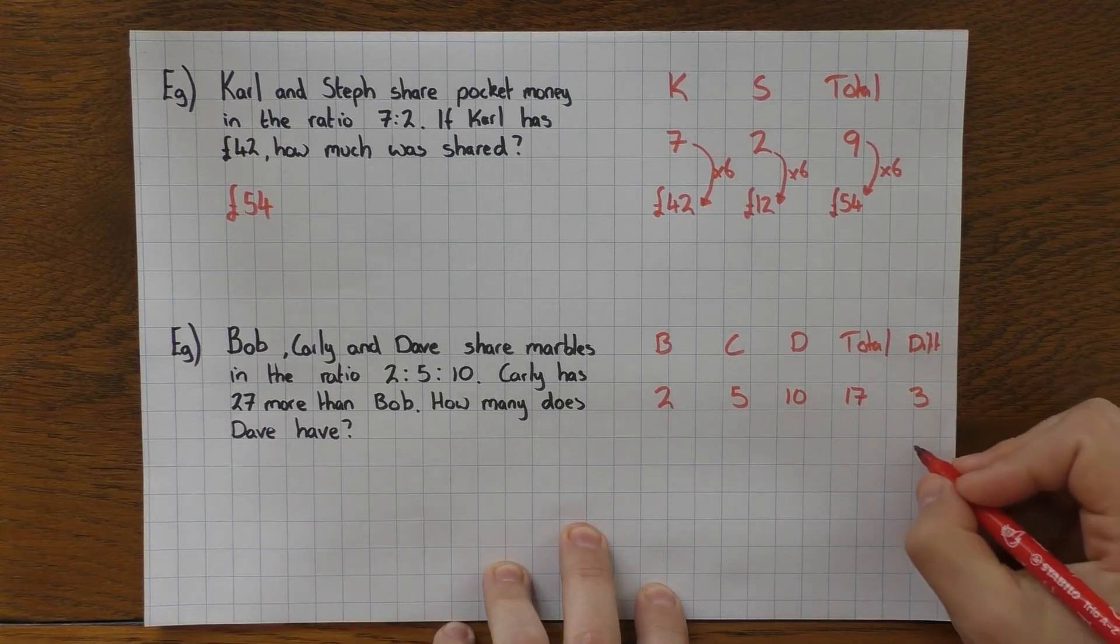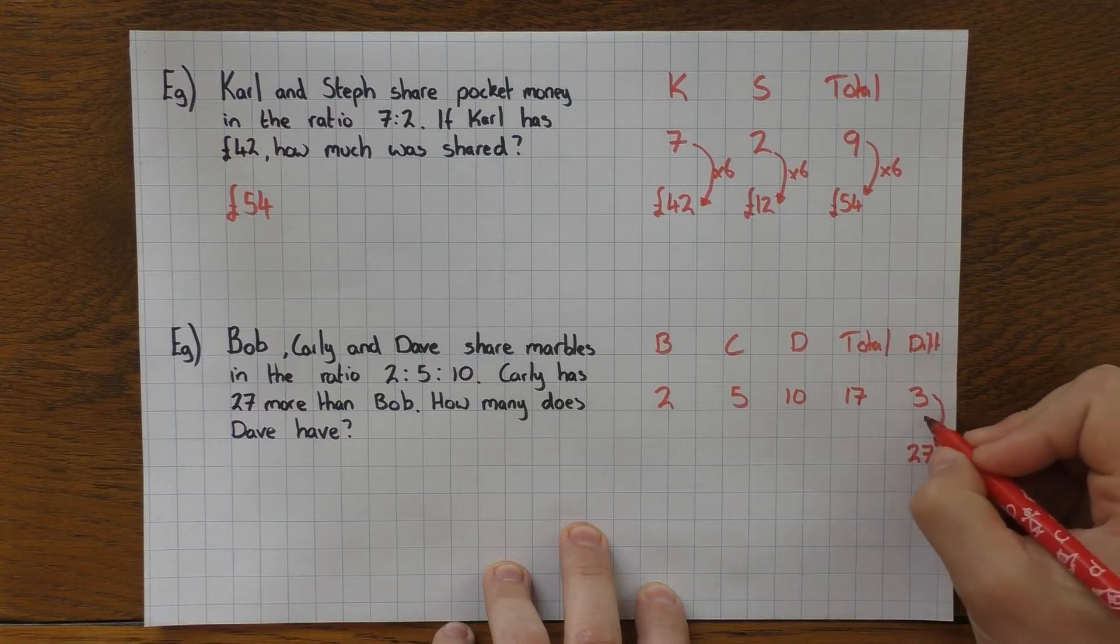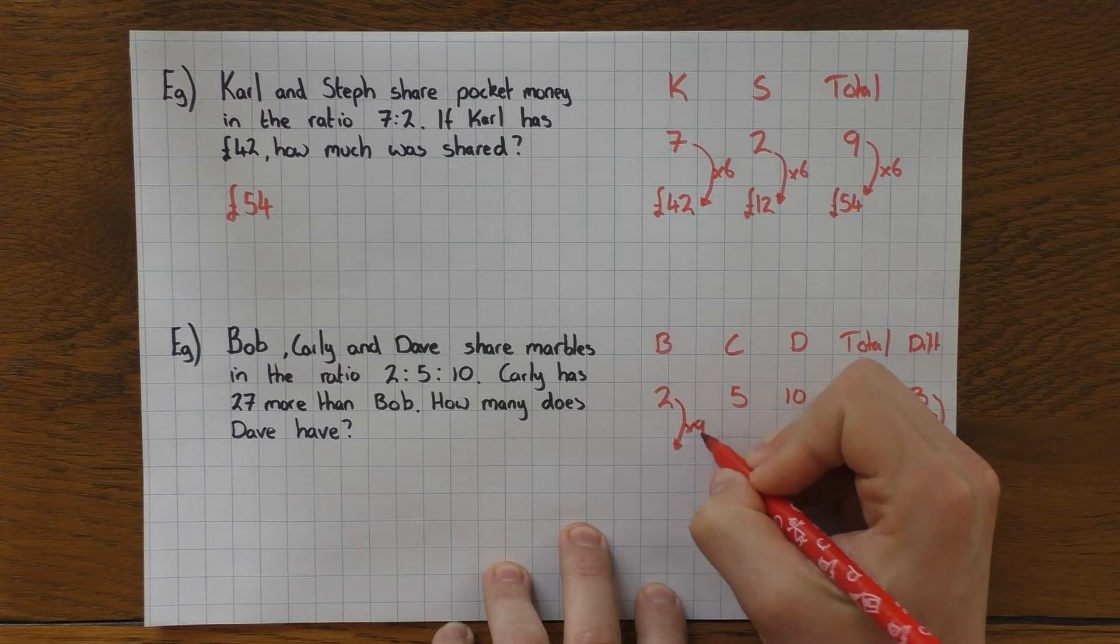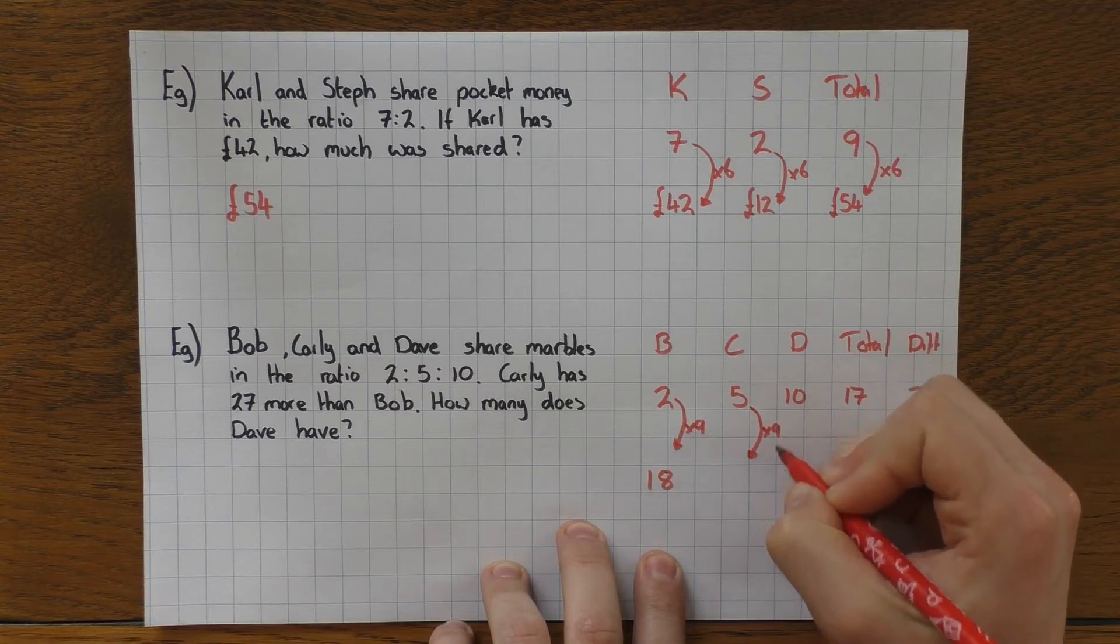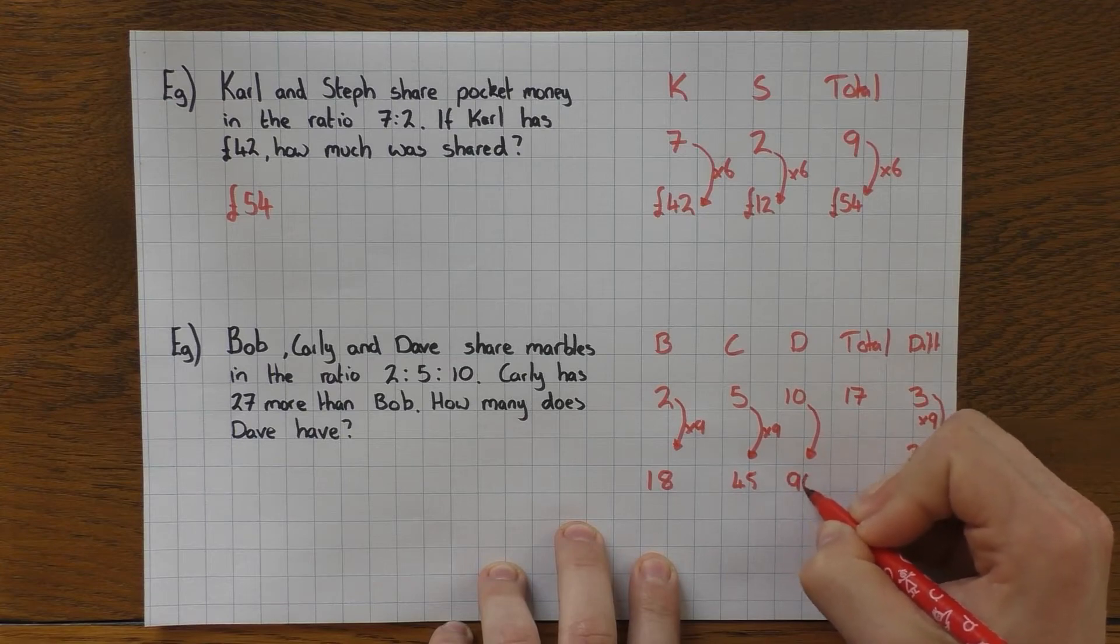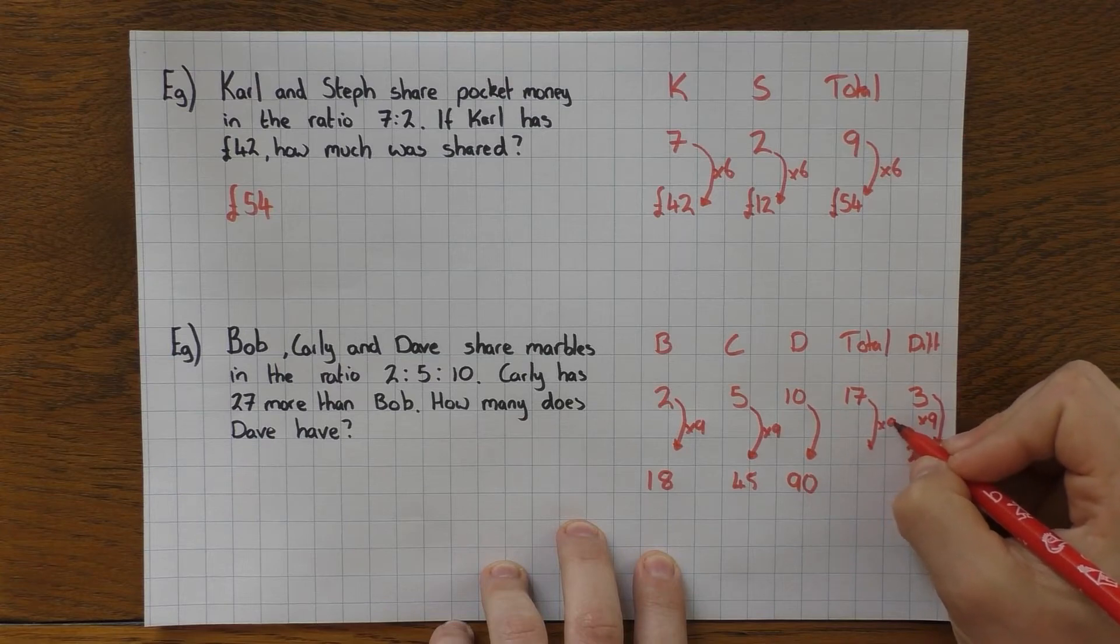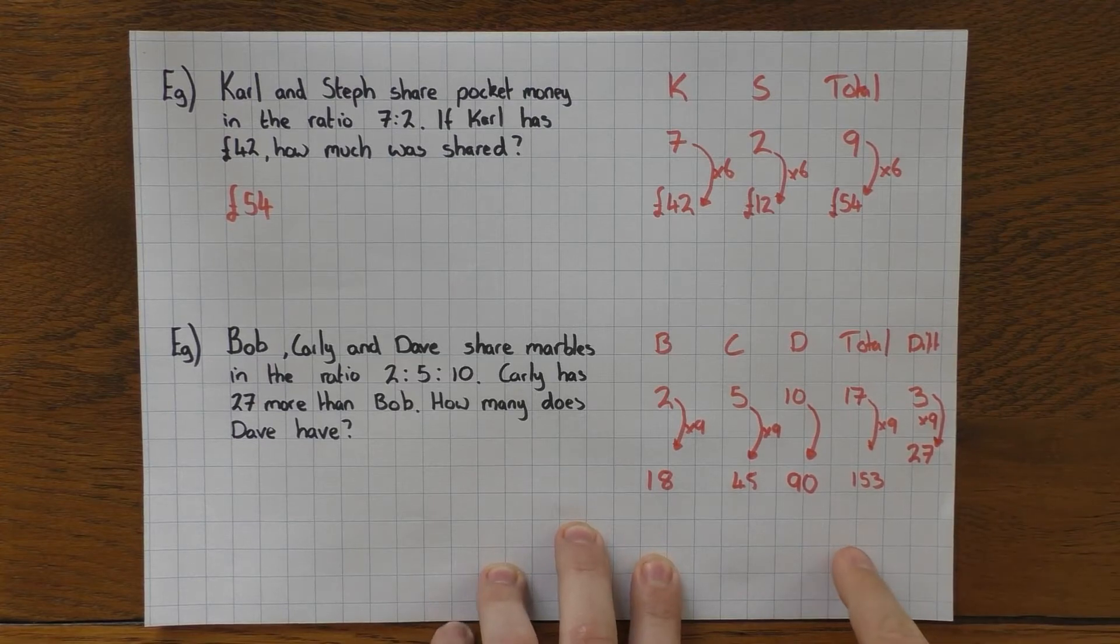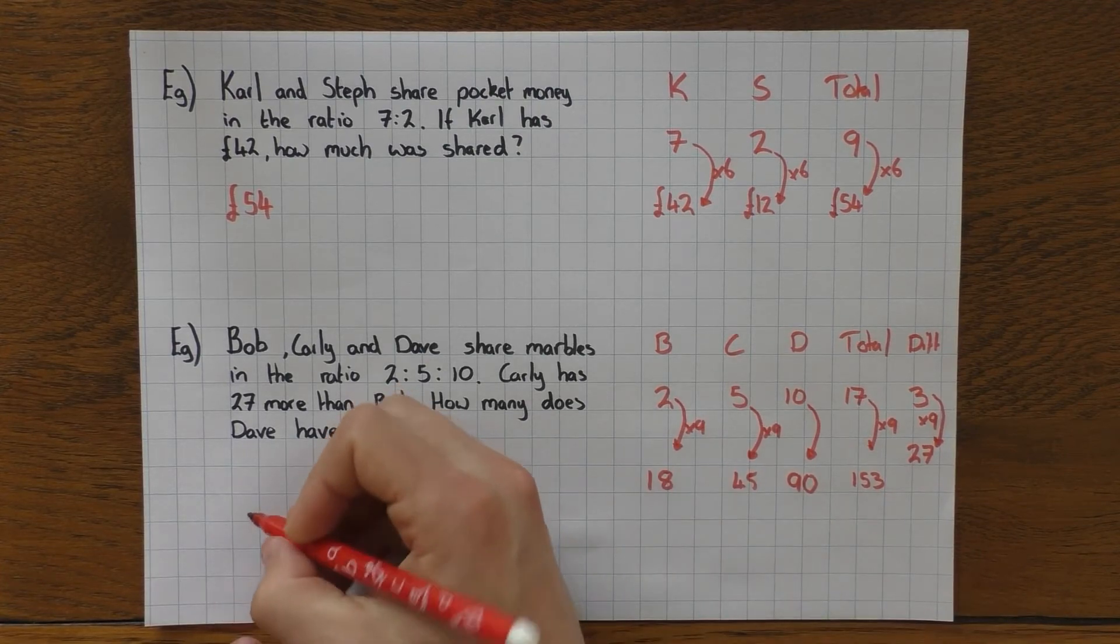So what is the difference between Carly and Bob? Well, the difference between 2 and 5 is 3. In the actual question, the difference is 27, so I'm going to put 27 underneath there and ask myself how do I go from 3 to 27? Well, I times by 9. So same thing for all these: times by 9. So that's going to give me 18, times by 9 gives me 45, times by 9 gives me 90. And again, you didn't need this, but if you did want to just do it fully, times by 9 gives us 153.